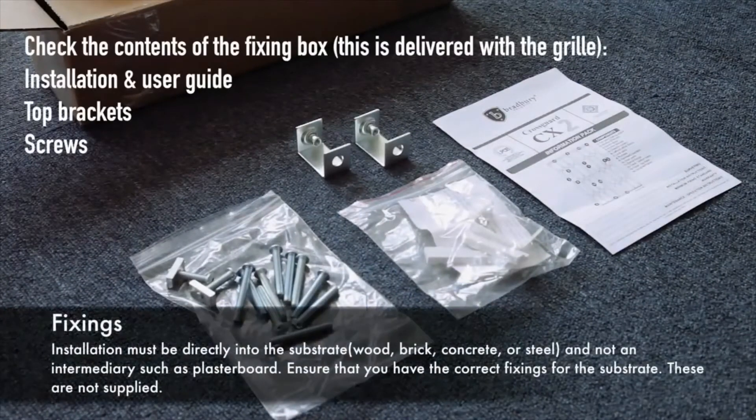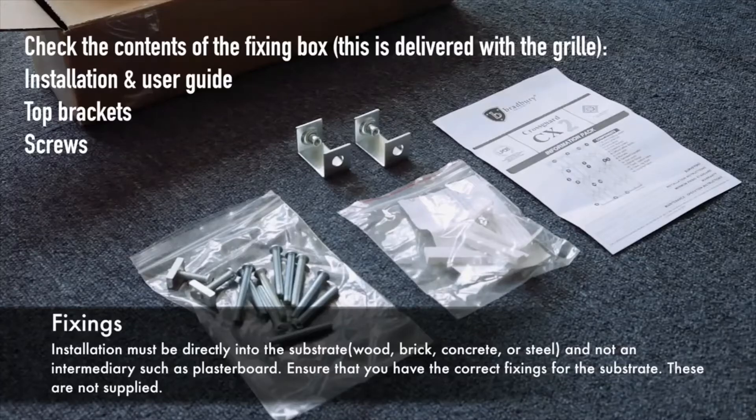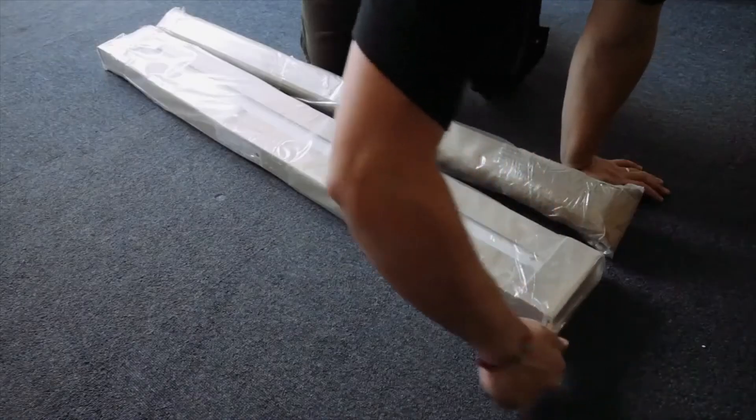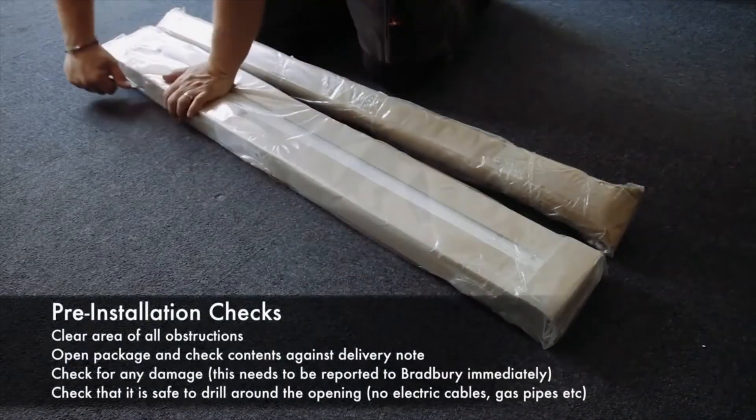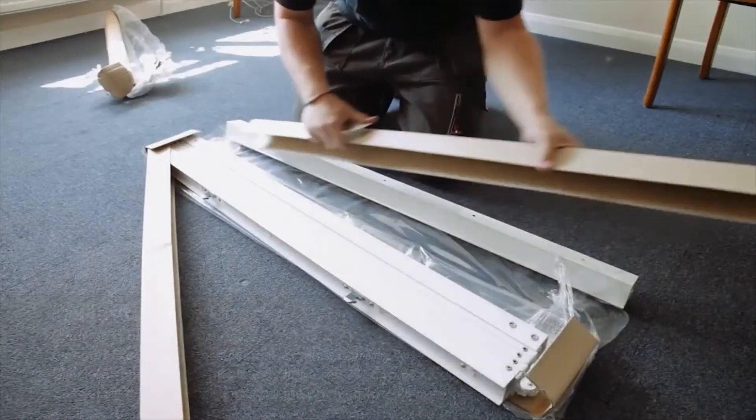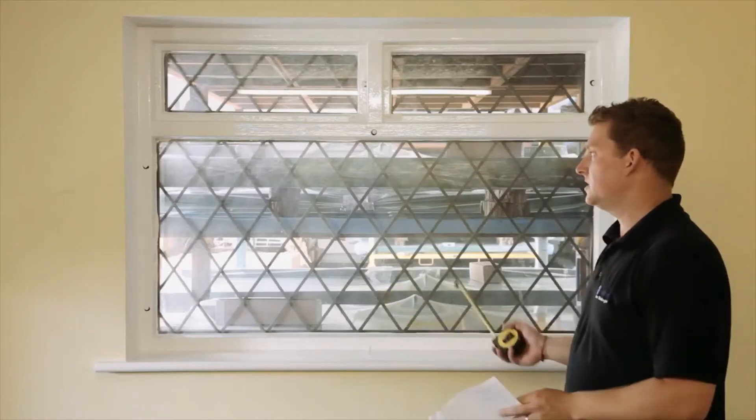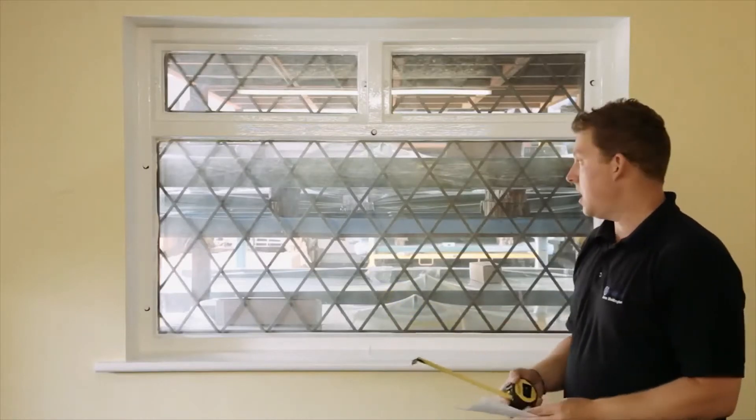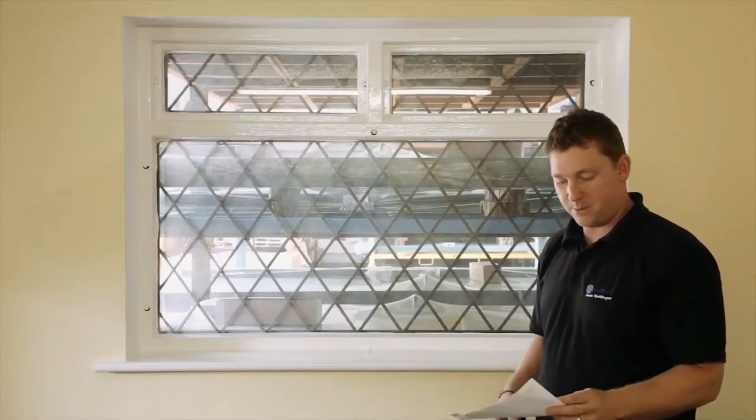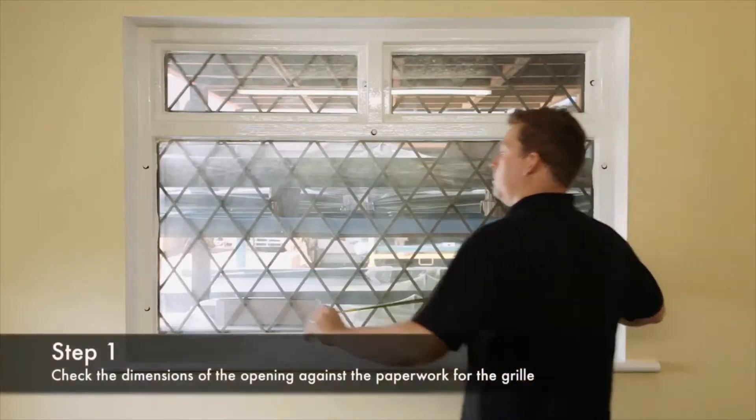Check the contents of the fixing box. Open the package and undertake the pre-installation checks. Today we're going to be fitting a CX2 grille into a standard window aperture. I'm going to start off by checking my paperwork for dimensions and checking my opening.